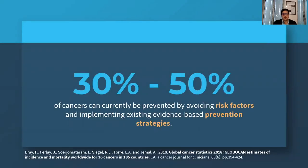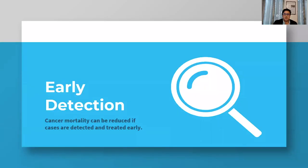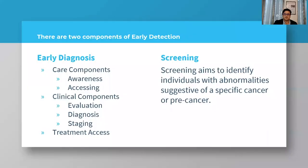Between 30 to 50% of cancer can currently be prevented by avoiding risk factors and implementing existing evidence-based prevention strategies. The cancer burden can also be reduced through early detection of cancer and management of patients who develop cancer. Cancer mortality can be reduced if cases are detected and treated early. There are two components of early detection: early diagnosis and screening.